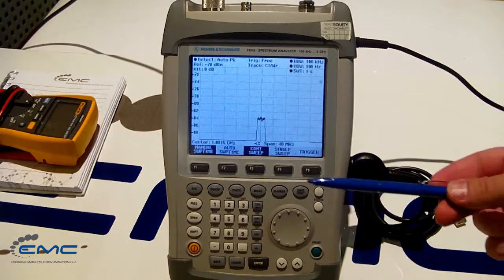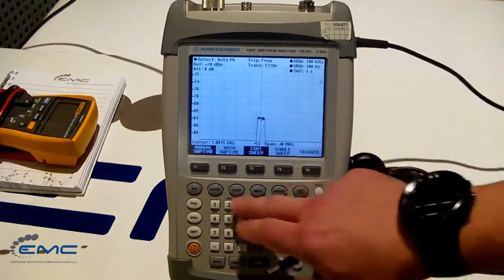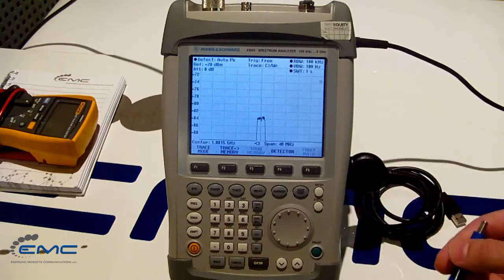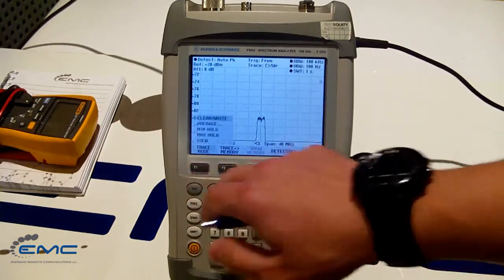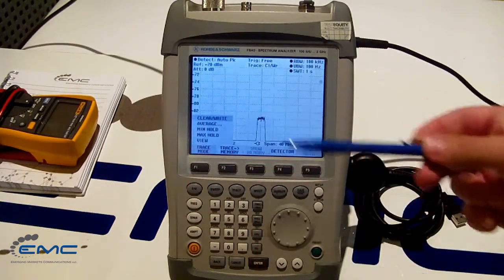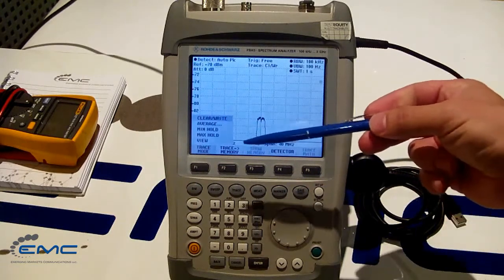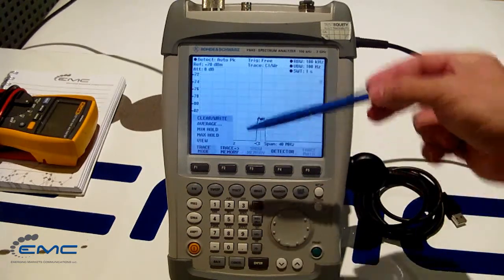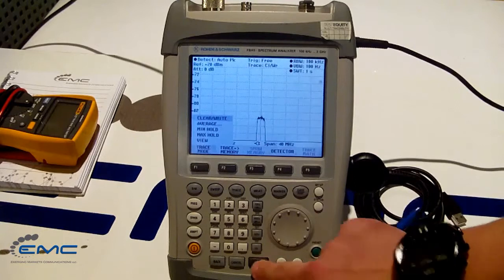Next step we're going to take is checking out some trace settings here. Hit trace. Typically it says clear and write. That is the one we need now, as we want to see live picture what's going on with our trace.